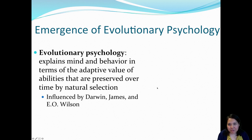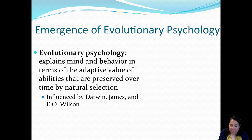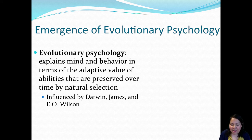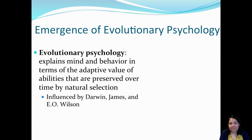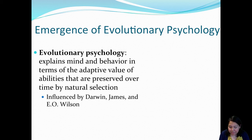Evolutionary psychology is another subfield within psychology. One of behaviorism's key claims was that organisms are blank slates on which experience is written — tabula rasa. Evolutionary psychology explains the mind and behavior in terms of the adaptive value of certain abilities preserved over time by natural selection. This has roots in Charles Darwin.